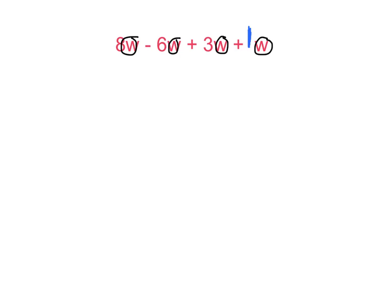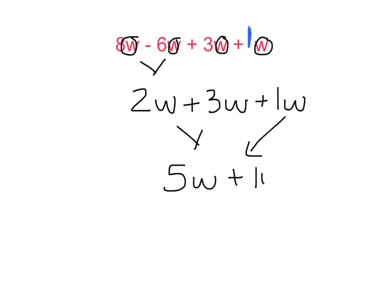And now all I need to do is combine them. So I've had 8w minus 6w. I can combine that to give me 2w. And then I just need to add the 3w and my 1w. I now will add my next term going from left to right following order of operations. So 2w plus 3w is going to give me 5w. And I pull down the other plus w.